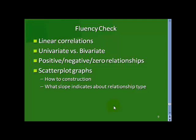Okay, at this point, things that you should know, what it means to say there's a linear co-relationship or correlation, univariate versus bivariate, what positive, negative, zero relationships look like, what scatterplots are, how they're constructed, and what the slope indicates about the relationship type. Again, if it slopes up to the right, that's positive, if it slopes down to the right, it's negative.